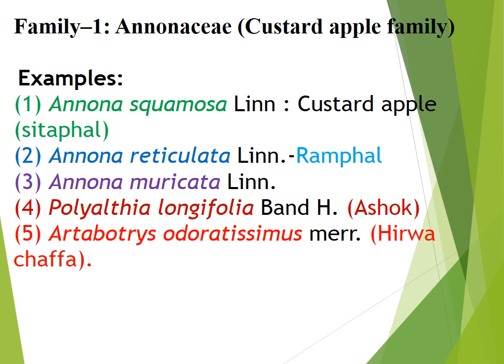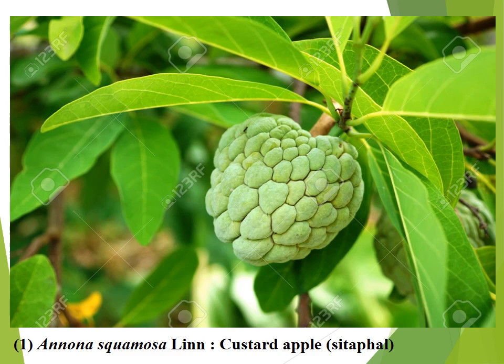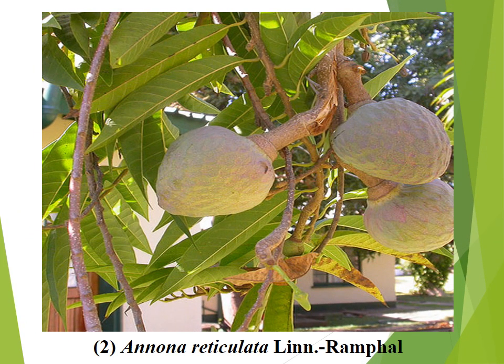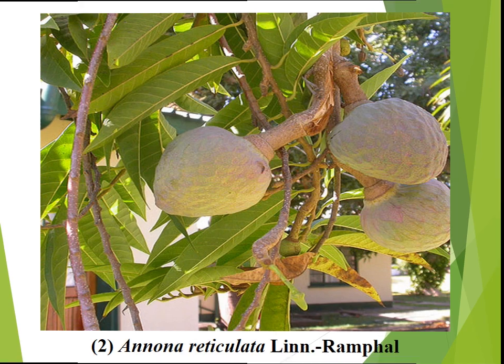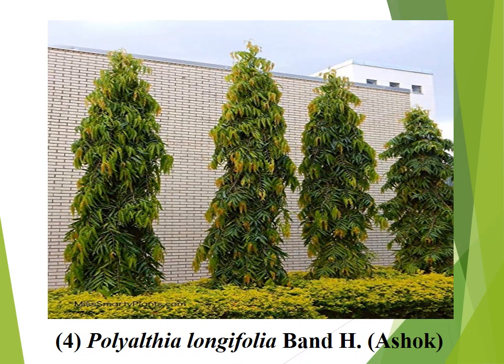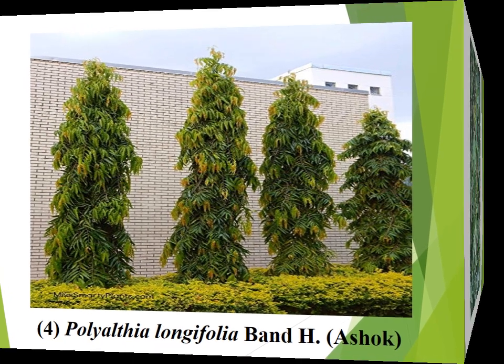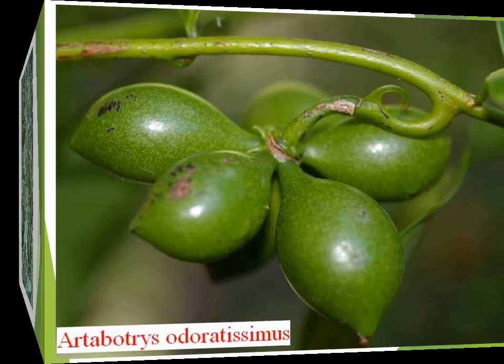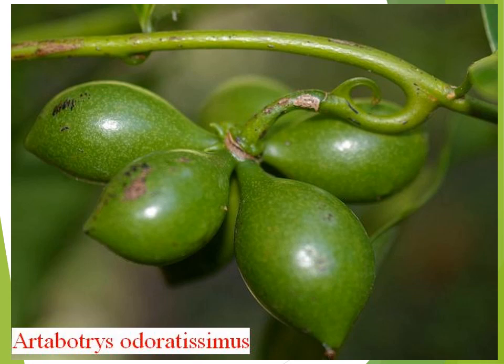Let us start family Annonaceae, also called the custard apple family. Examples include Annona squamosa, Annona reticulata, Annona muricata, Polyalthia longifolia, and Artabotrys odoratissimus. Annona squamosa is the custard apple or sitafal. Annona reticulata is also called Ramfal. Annona muricata, Polyalthia longifolia is also called Ashoka. Artabotrys odoratissimus is known as mast.